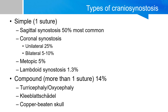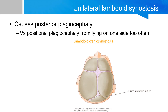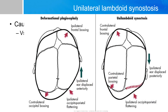Recall that the unilateral coronal synostosis causes a disease called anterior plagiocephaly, and we mentioned that there is another entity called posterior plagiocephaly that is caused by the lambdoid synostosis. When you have a fused lambdoid suture on one side, this causes an ipsilateral occipital-parietal flattening and compensatory contralateral frontal and parietal bossing because of the compensatory growth.